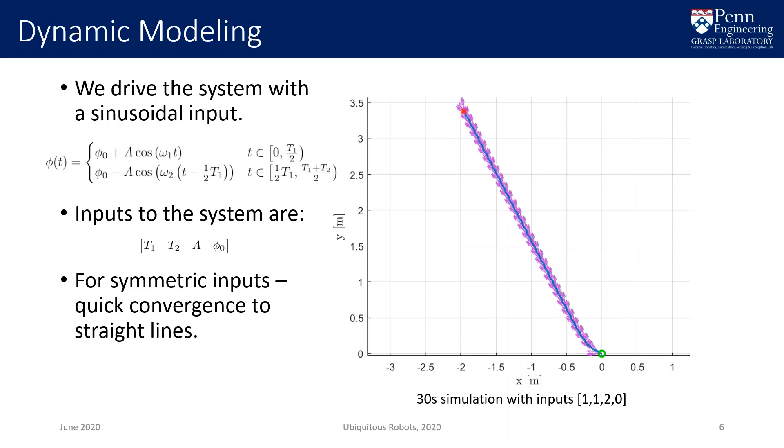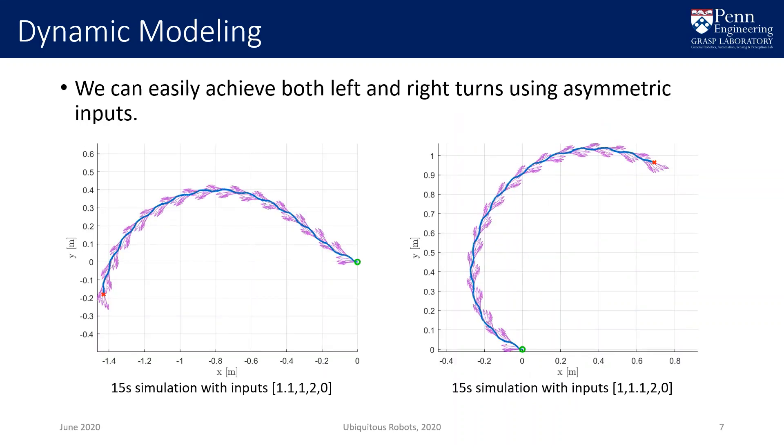We therefore drive the system with a sinusoidal input. This equation defines a piecewise sinusoid with constant amplitude but switching frequency. By varying the period of rotation between the two directions of oscillation, we can create differential thrust and allow the boat to turn. Thus, the inputs to the system are the two periods T1 and T2, the amplitude of rotation A, and the center of rotation phi naught. A symmetric input wave, defined by T1 equals T2, produces, in simulation, quick convergence to a straight line trajectory. The simulation also predicts that we can generate clear turning behavior in either direction with small variations of the period.